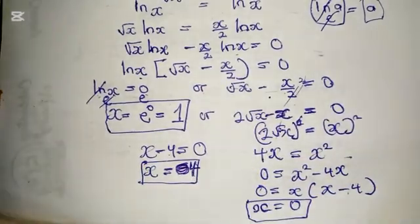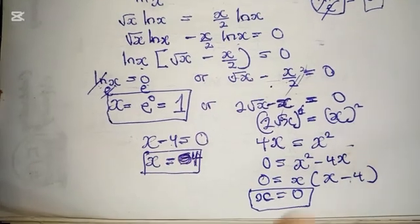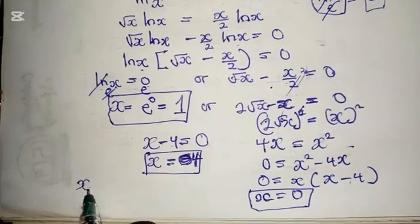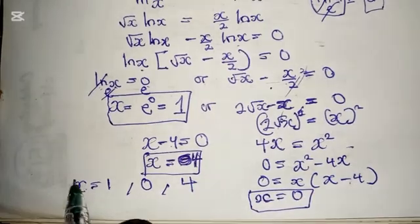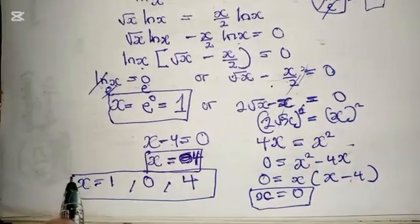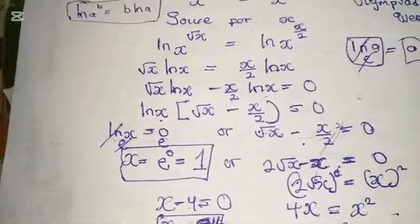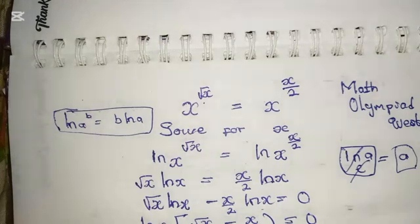So we have got three solutions or three values for x in this video, which is x equals 1, 0, and 4. These are the three solutions for x. If you plug everything here, you're still going to get the same answer.